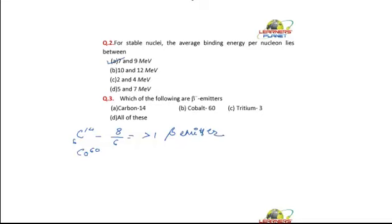Likewise, cobalt-60 with atomic number 27, the ratio will be 60 minus 27, that is 33 by 27, which equals 1.2. This will also be a beta emitter.